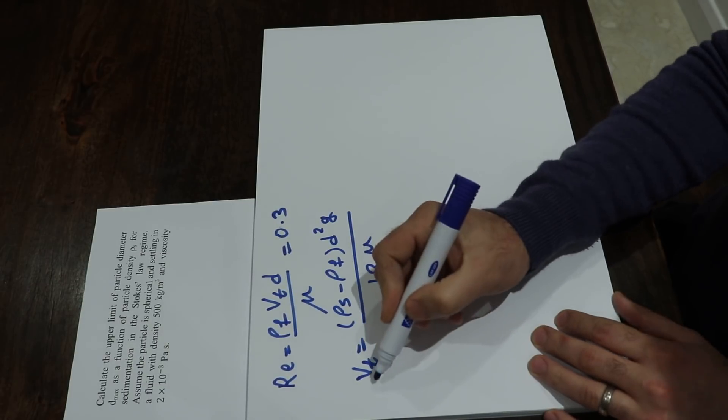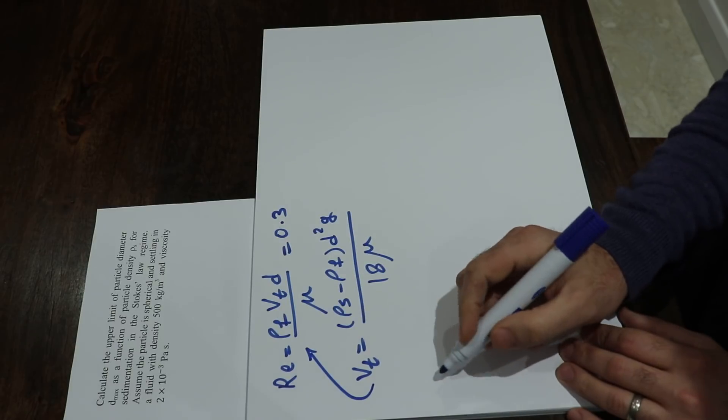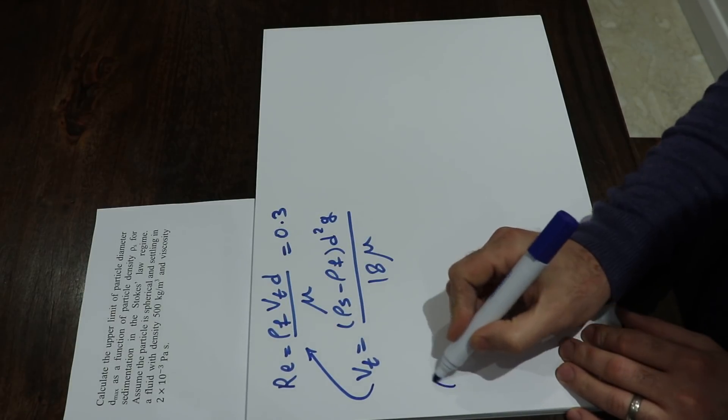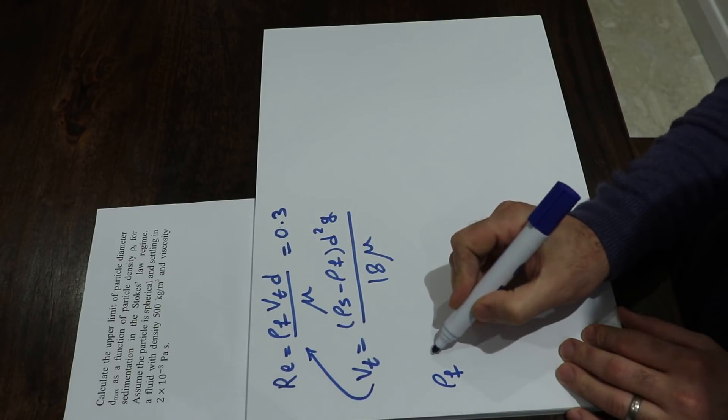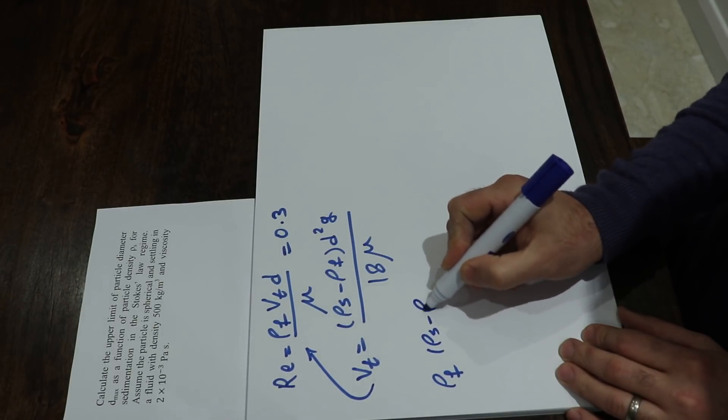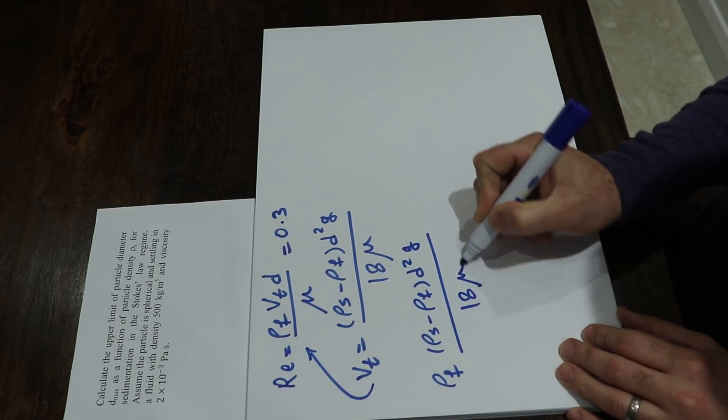So if you substitute this equation into the definition of the Reynolds number, you will get ρ_f times v_t. Instead of v_t, I put this definition: (ρ_s minus ρ_f) d squared g divided by 18μ.